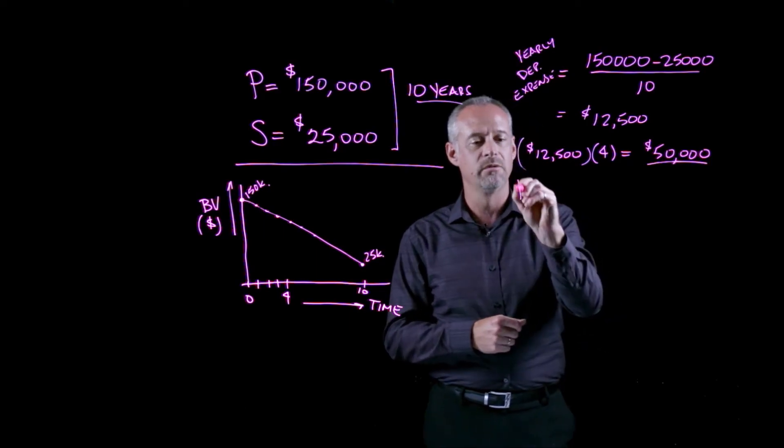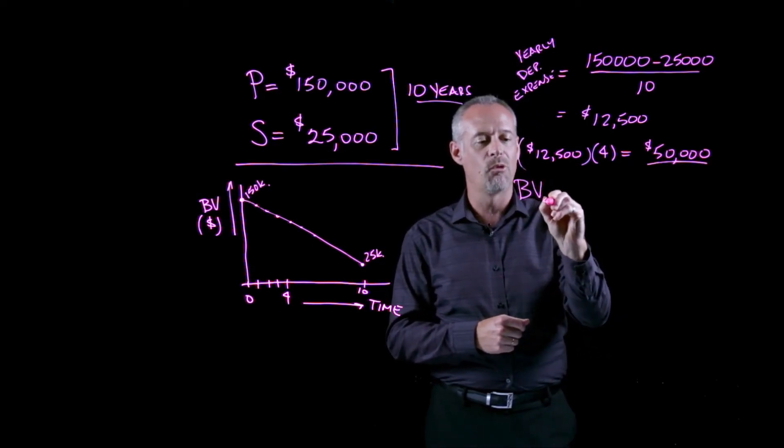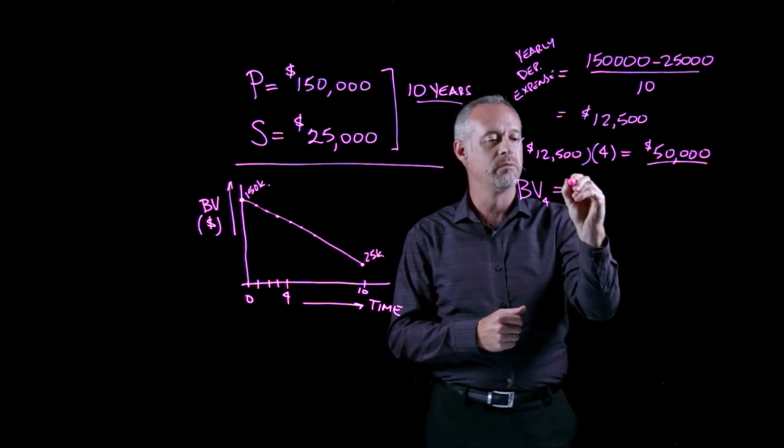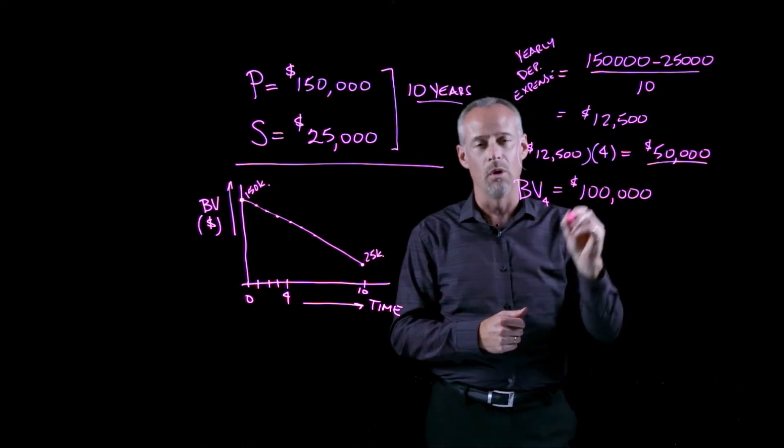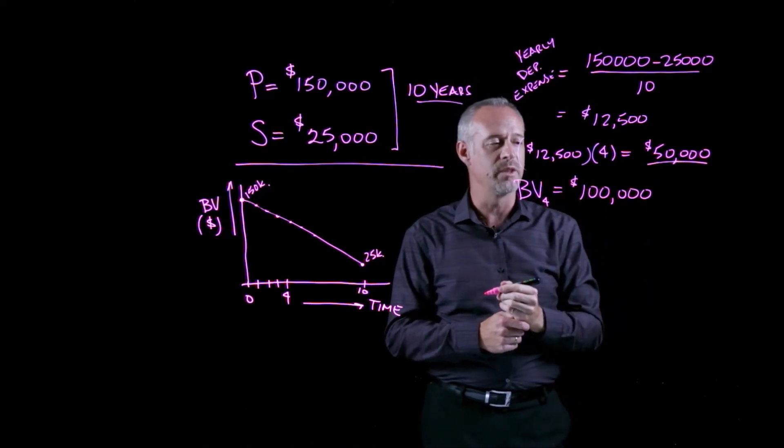and I started with a hundred and fifty thousand as my purchase price, then the book value at year four, we sometimes write it like this, would be a hundred thousand dollars, or a hundred and fifty minus fifty thousand.